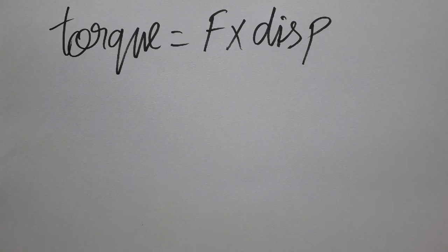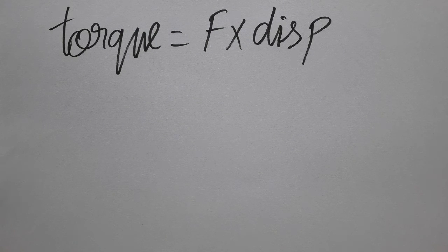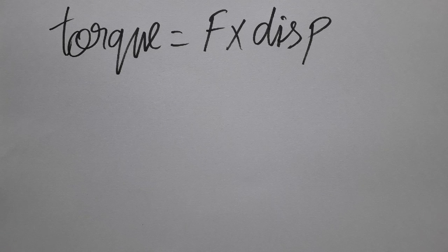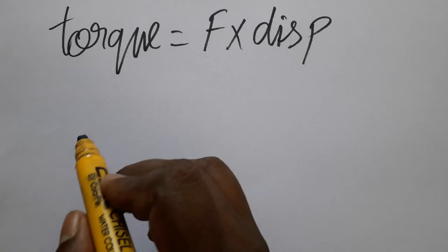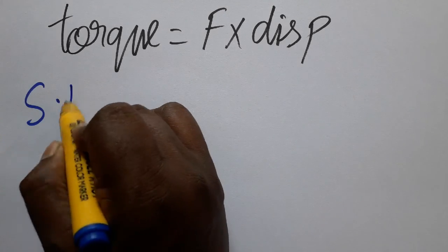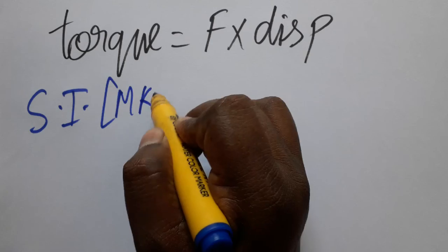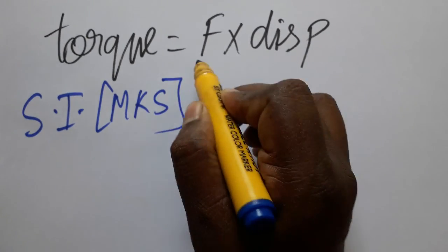Friends, today we are going to see torque SI unit and CGS system. We are going to see both units. First we will see SI unit, which is the system of internationals, following the MKS system: meter, kilogram, second.